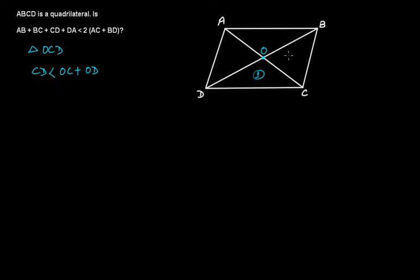Now if I take this one as a second, so if I make it first, the second triangle is what? The second triangle is triangle O, B, C. In this triangle O, B, C, O, C plus O, B will be greater than B, C, or in other terms, we can say that B, C is less than O, B plus O, C. This is the second.